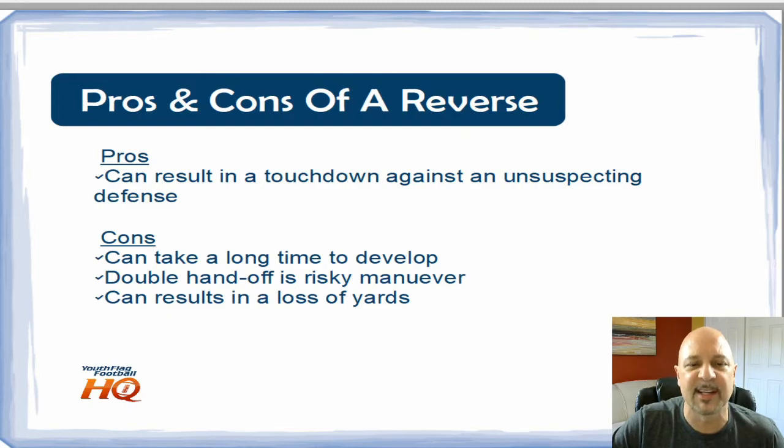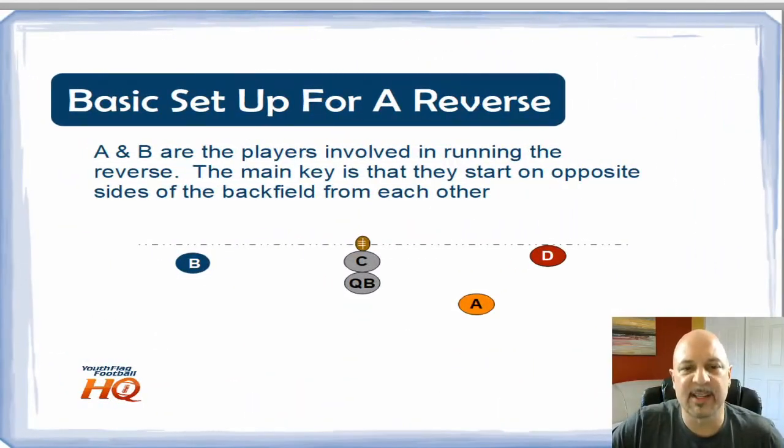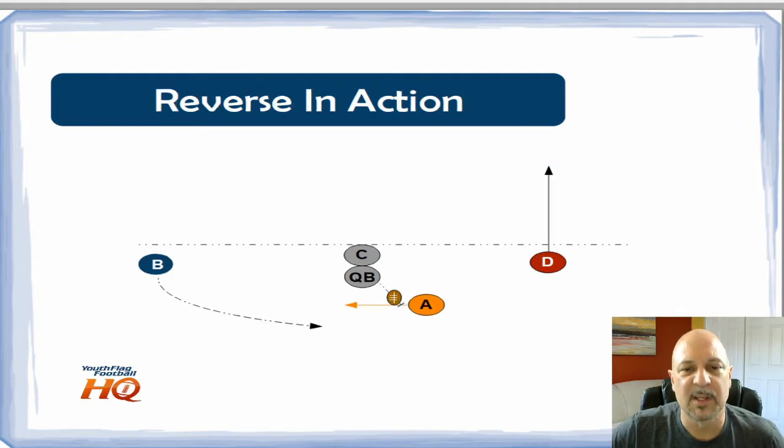Here is our basic setup for a reverse. The key players here are A and B. A is lined up as a running back in the backfield ready to execute a sweep type play, and B is lined up as a wide receiver showing that they are ready to run a play as a receiver and run out and catch a pass, which is not what they're going to do but that's what they want to show the defense.